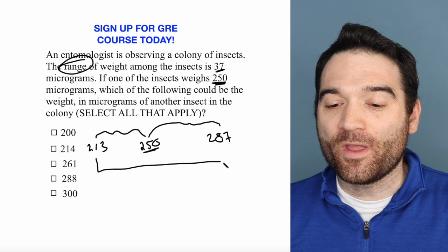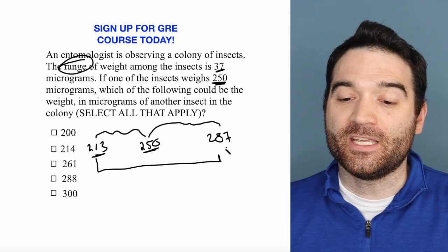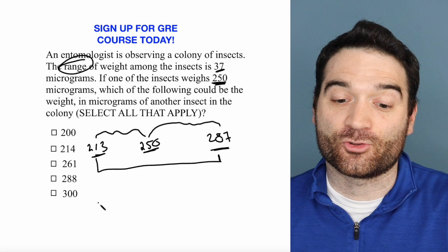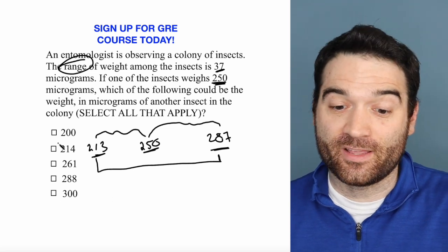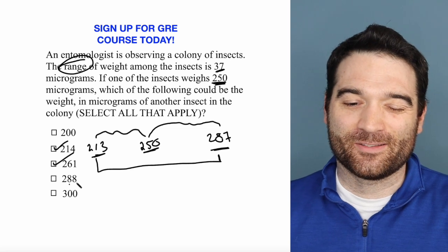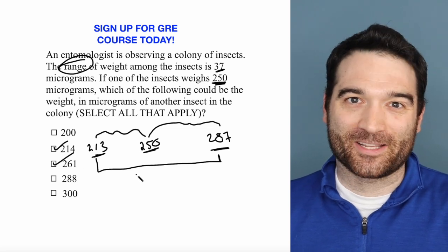So basically anything within this range from 213 to 287 could be an insect in this distribution. Well, which answer options are in this range? 214, 261, and that's it. This one just misses it, so these two are the correct answers.